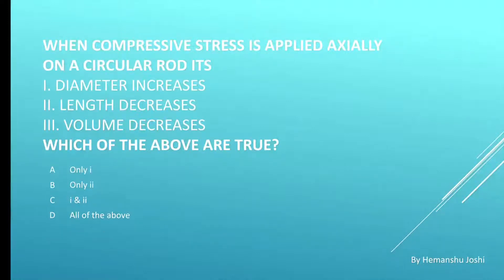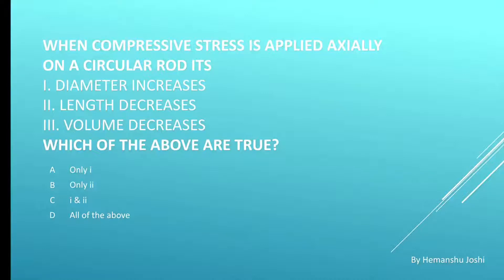Next question. When compressive stress is applied axially on a circular rod: first, diameter increases and length decreases; second, length decreases; third, volume decreases. Which of the above are true? As we know, if the component is under compressive stress, the length will decrease and diameter will increase. So the correct answer is C.